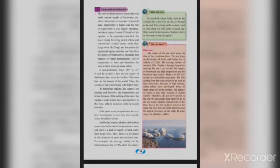The uneven distribution of temperature on earth and uneven supply of fresh water are among the factors that determine the salinity of seawater. In the tropical zone, temperature is higher and the rate of evaporation is also higher; therefore, salinity is higher around 5 degrees north and south of the equator.